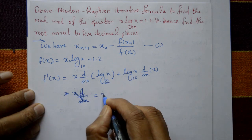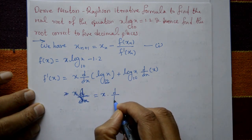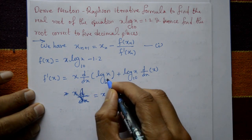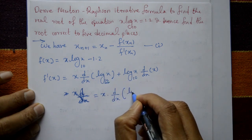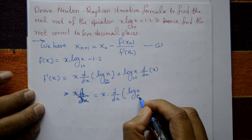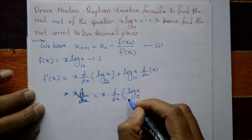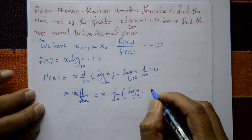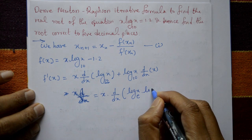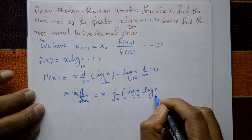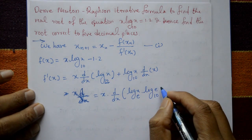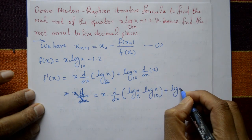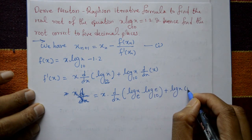The constant term differentiates to 0. For x·(d/dx)[log₁₀(x)], write using change of base: log_e(x) divided by log_e(10), which is log_e(10) in the denominator — equivalently multiplied by log₁₀(e). Differentiating log_e(x) gives 1/x, and differentiating x gives 1.